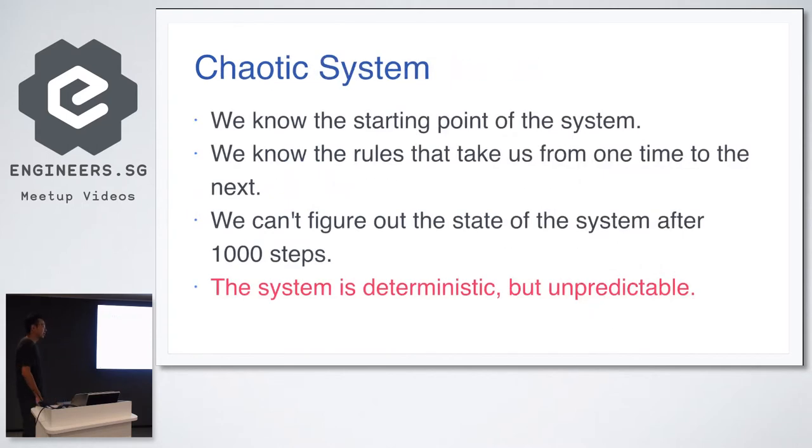By the time you compute the 1,000th iteration, you have more than the number of atoms in the universe to represent that number. We know that it's between 0 and 1, but we don't know what the value is. So this is a typical example of a chaotic system, where everything is deterministic. We know the initial condition, you know the rules to derive from one step to the next. But I would say it's unpredictable, because we don't know the values. It's just hidden. We don't know the value. In the long term, it's opaque. We don't know the future.